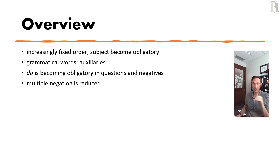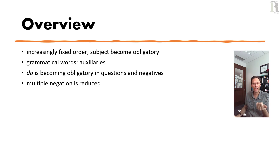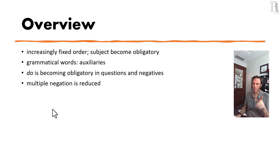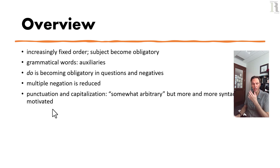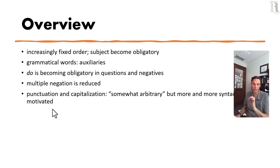There is also a reduction in what's called multiple negation or negative concord. If you say 'I don't have no problem,' that's considered incorrect today. In languages like Spanish, multiple negation intensifies the negation rather than canceling it out. This was the case in Middle English, but in early modern English there's increasingly a shift to where multiple negation is not allowed. Punctuation and capitalization begin somewhat arbitrarily but towards the end of the early modern period become more syntactically motivated.